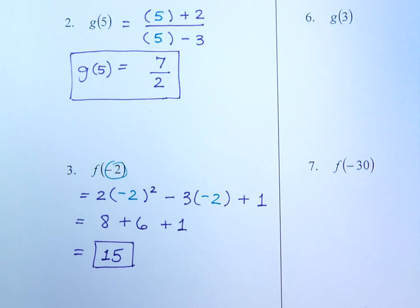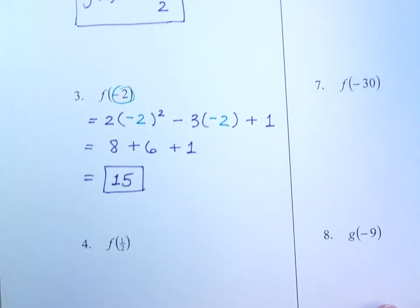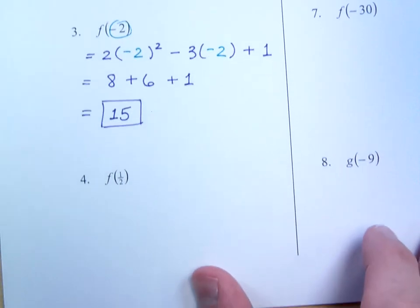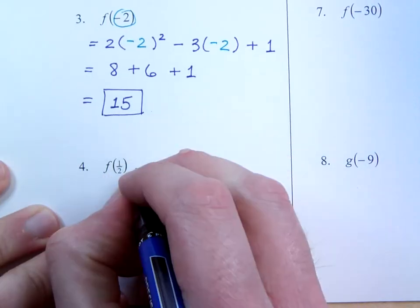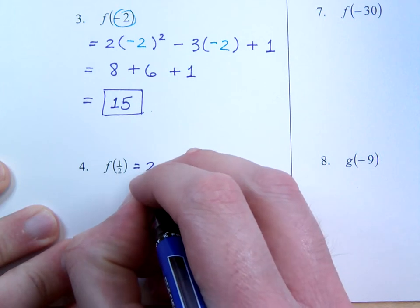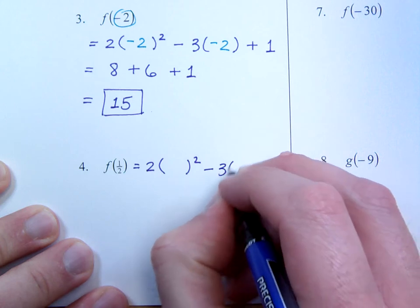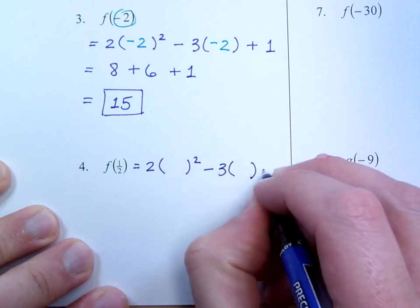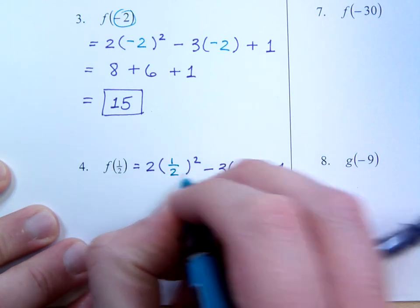So there's nothing really new here. Just plug in numbers and you evaluate. Just make sure you follow the order of operations, especially when you get down to something like number 4. Here in number 4 you have a fraction that you have to plug in. So again it was 2x squared, so 2 parenthesis squared minus 3x, so minus 3 times parenthesis plus 1. And we're going to replace this with 1 half.